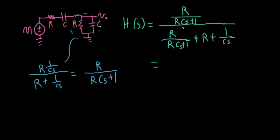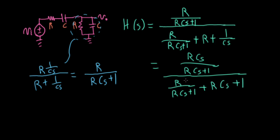So I would like to clear out the fractions here, and so let me first multiply everything by Cs just to get rid of that. So I'll have RCs over RCs plus 1, and then I'll have all of this over R over RCs plus 1 plus RCs plus 1. Wait a minute, I forgot something, there should be a Cs here.